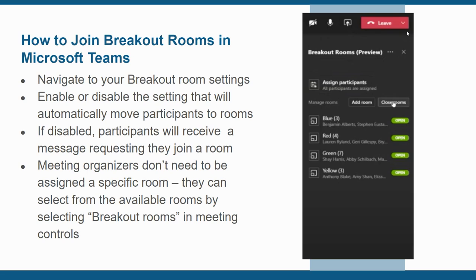As a meeting organizer or breakout room manager, you have the option to join any of the rooms. From your meeting controls, click breakout rooms. Next, hover over a room and select more options, then click join room to enter a specific breakout session. If you'd like to leave that breakout room to join another, click return in your meeting controls.